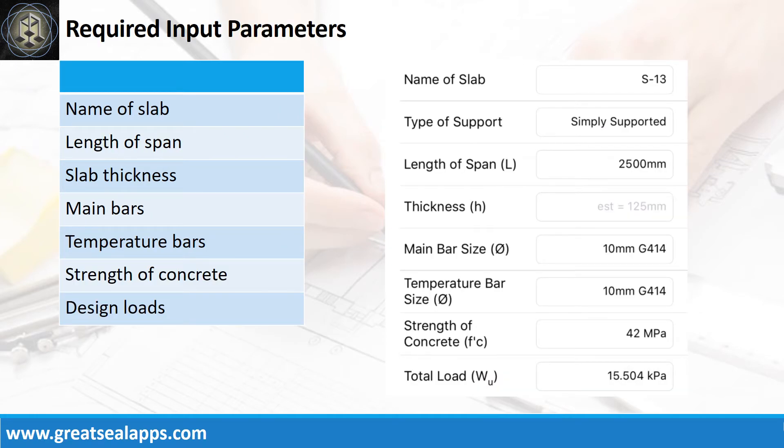Enumerate input parameters required. Name of slab, S13. Type of support, simply supported. Length of span, 2500 mm. Slab thickness, 125 mm. Main bars and temperature bars, 10 mm bar at grade 414. Strength of concrete, 42 MPa. And factored load, 15.504 kN per meter.